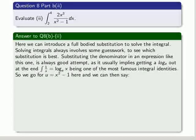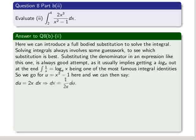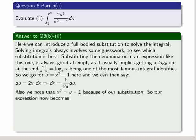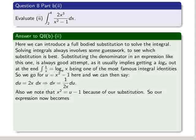So we go for u equals x squared minus 1 here, and we can then say that du equals 2x by dx. And that implies that dx equals 1 over 2x du.